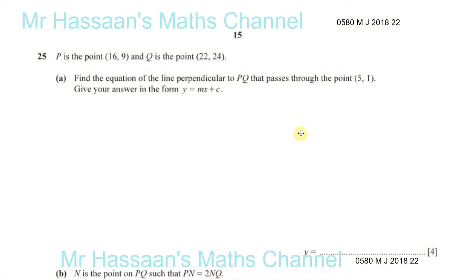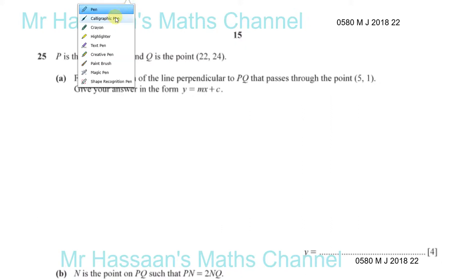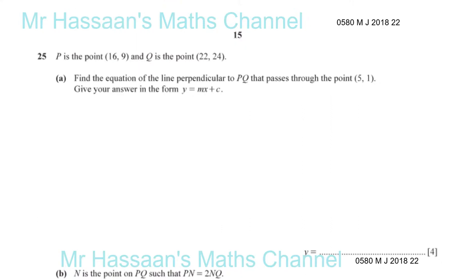Here we have question number 25 from May/June 2018, paper 2, variant 2. Part A tells you that P is a point (16, 9) and Q is a point (22, 24). Find the equation of the line perpendicular to PQ that passes through the point (5, 1).